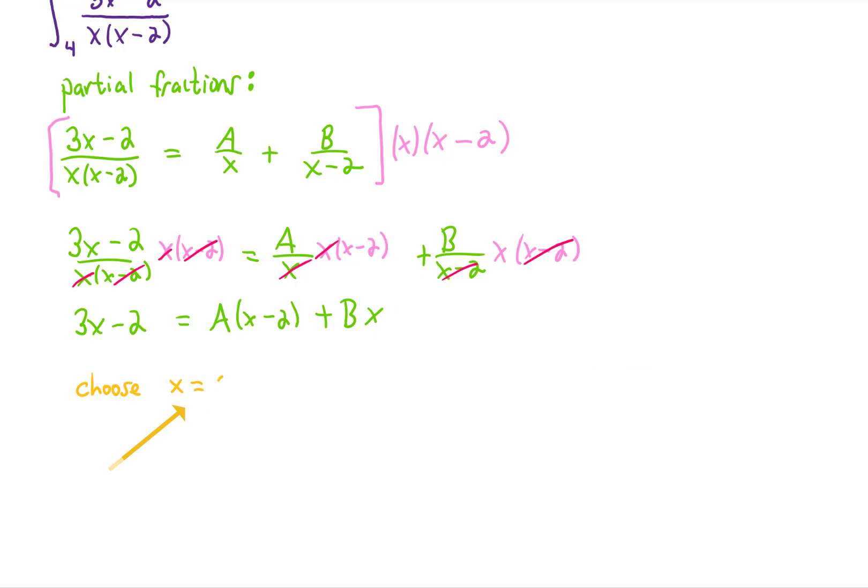Let me demonstrate. For example, we could choose x equals 0, and if we plug x equals 0 into this equation, you'll notice that pretty quickly we get negative 2 equals negative 2 times A. That gives us an A value of 1. That choice of x worked out really well because it just cancelled out our B term, leaving us with only an A.